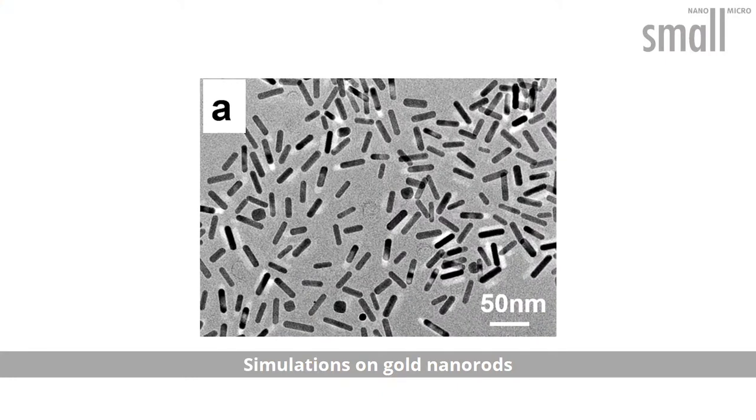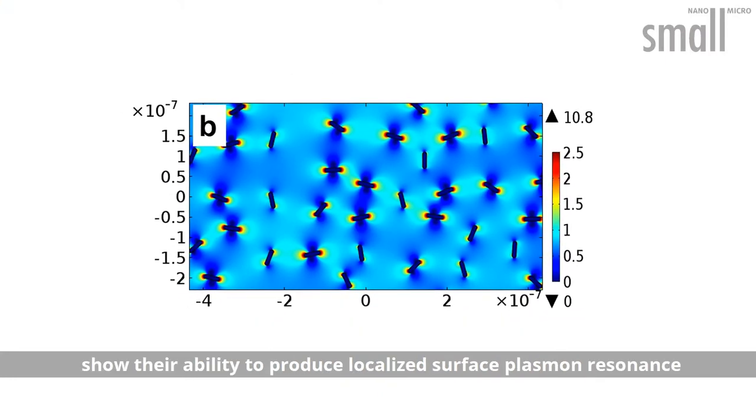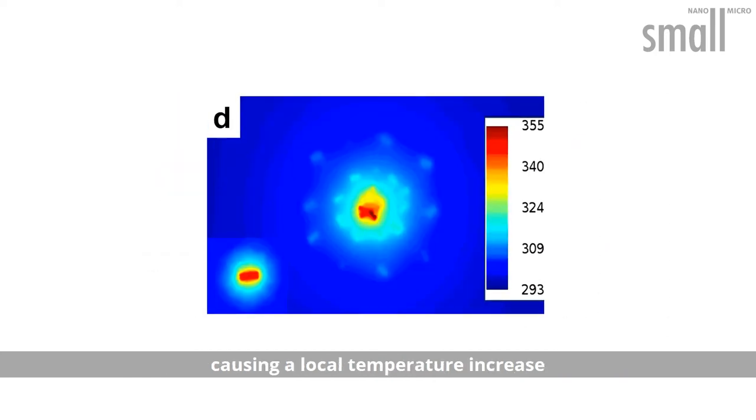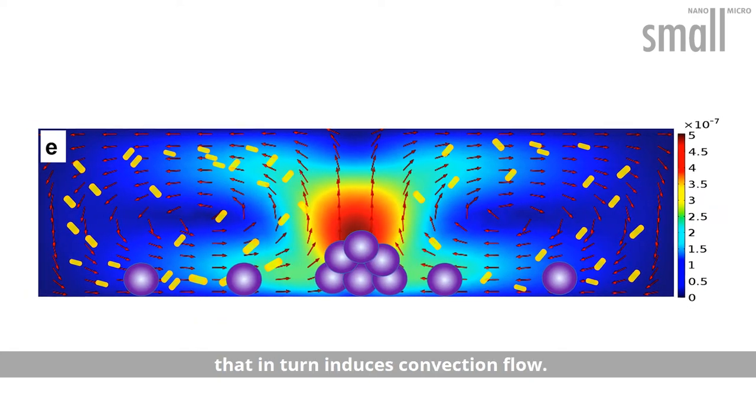Simulations on gold nanorods show their ability to produce localized surface plasmon resonance that intensifies upon laser light-triggered aggregation, causing a local temperature increase that, in turn, induces convection flow.